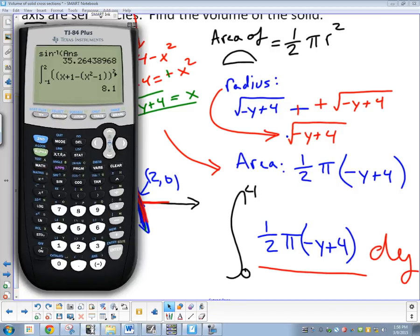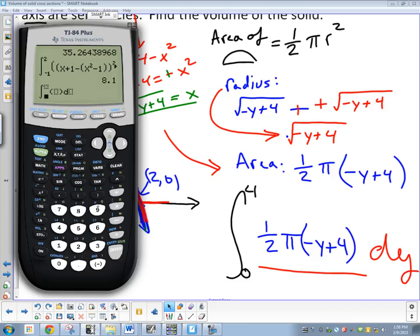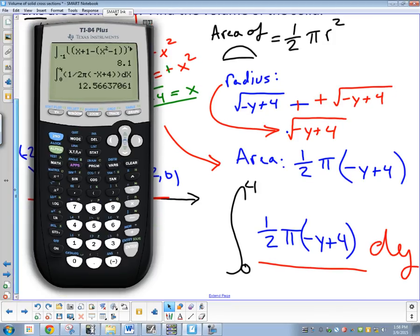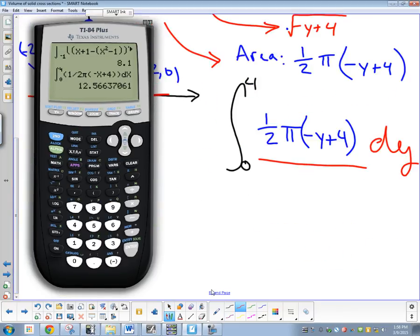So calculator math 9, I'm going from 0 to 4, (1/2)π(-y + 4), in this case using x for the variable, dx. My final answer is 12.566.